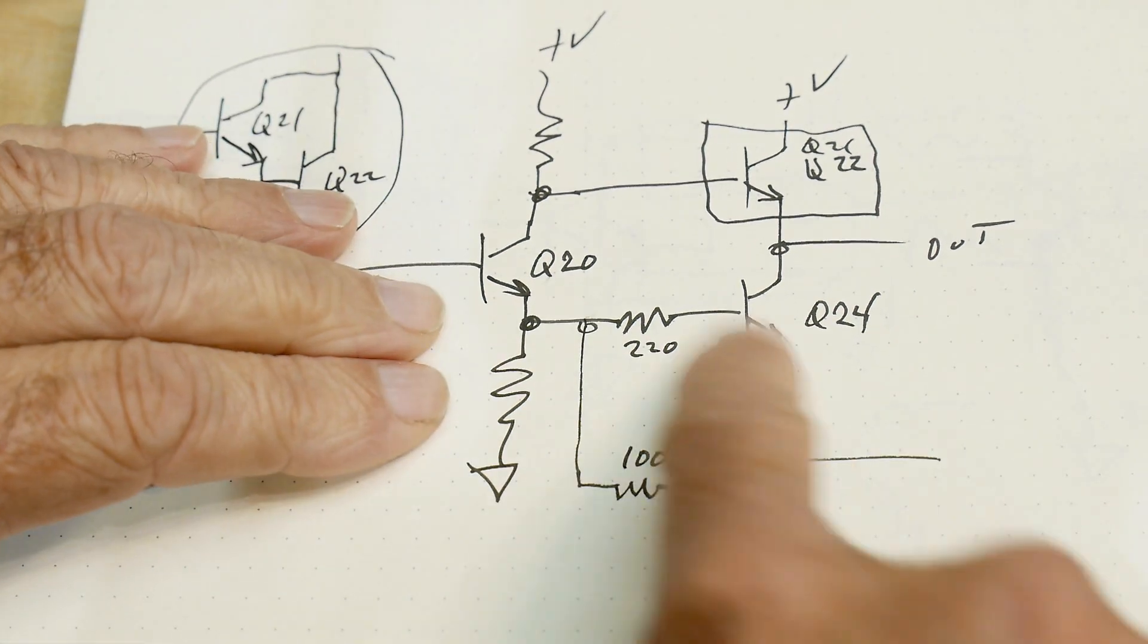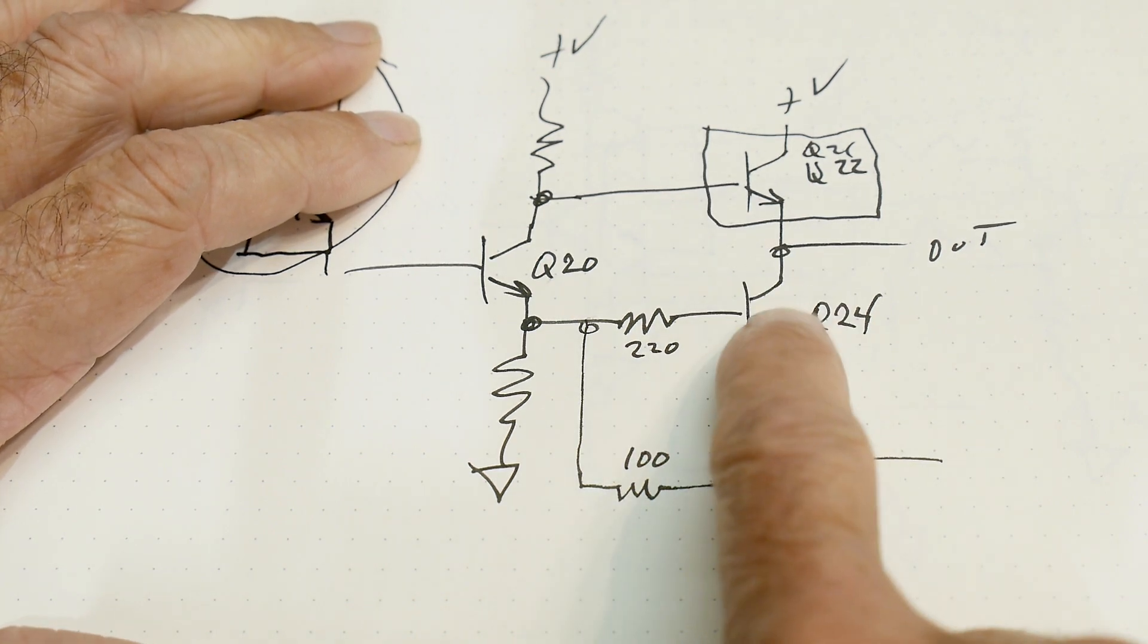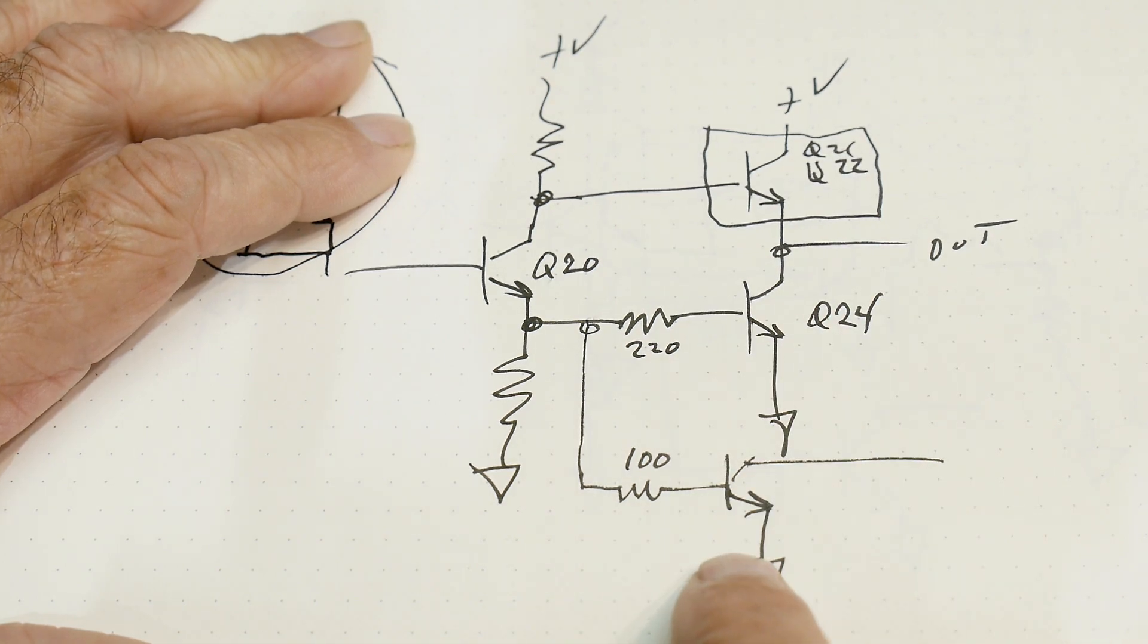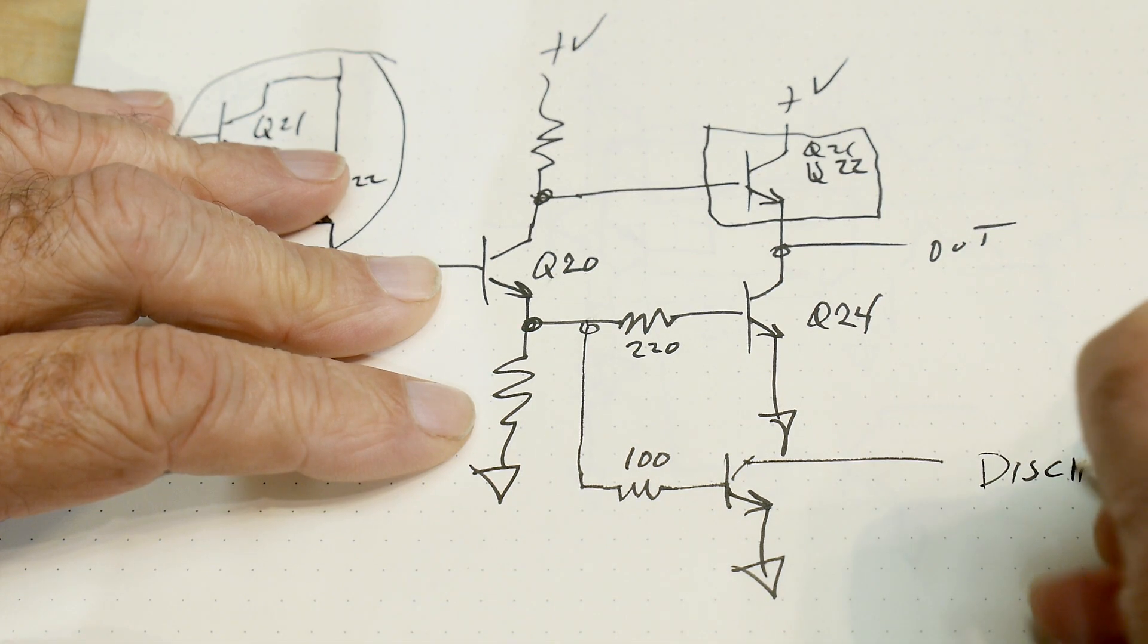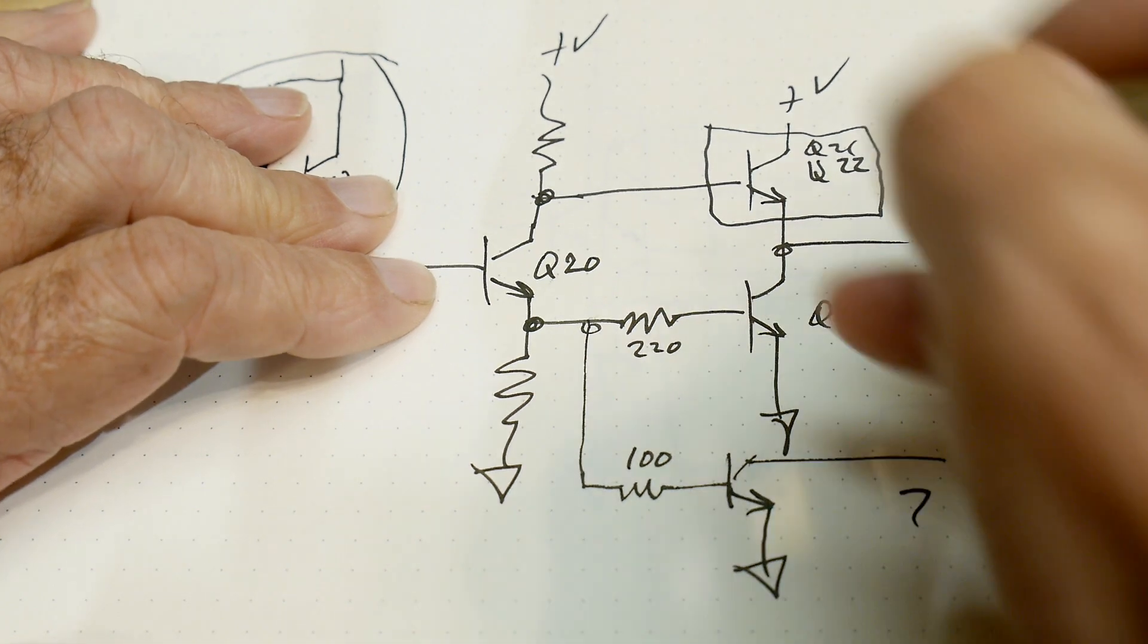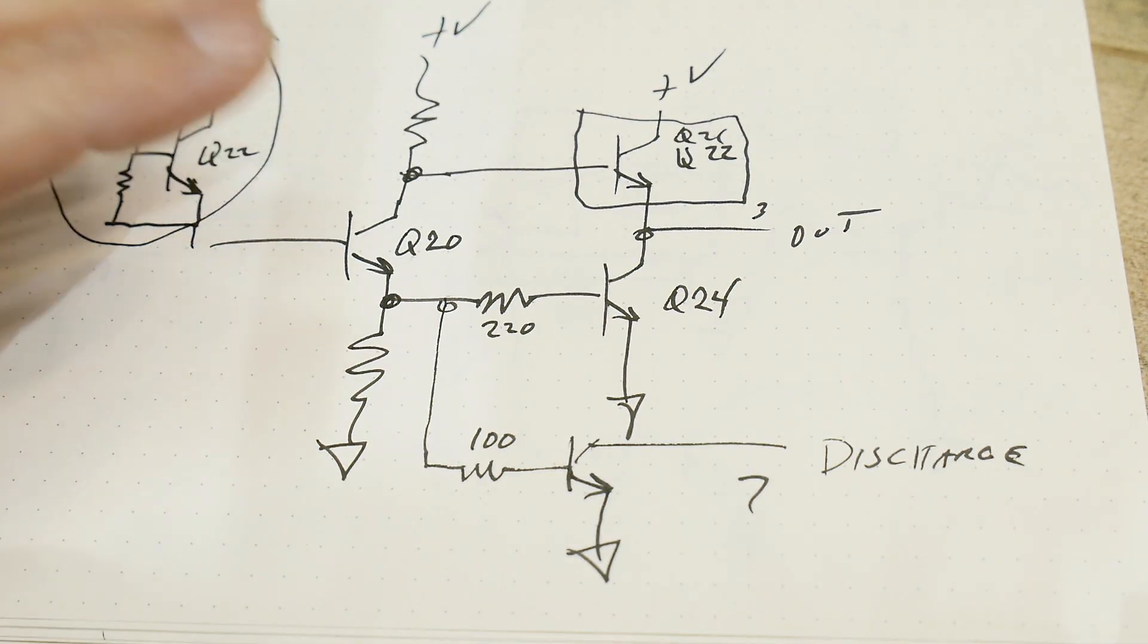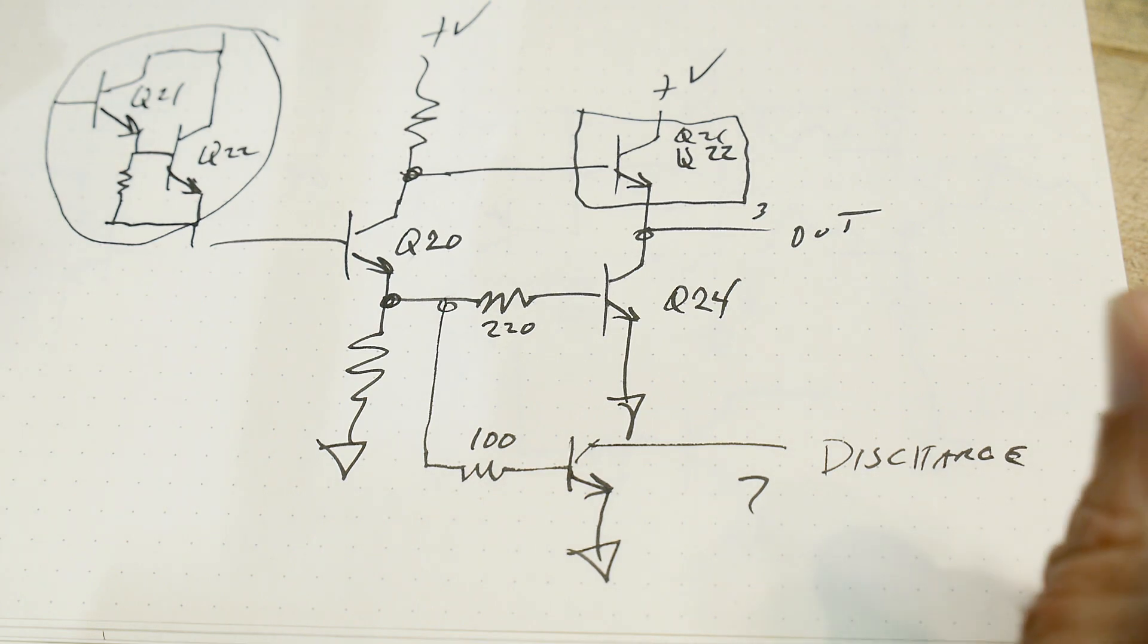That's how that works. That's why I say it's just like another output on the open collector because it comes exactly off the same signal that drives this. No magic, it's just whatever pulls down on this pulls down on this as well. So that's the discharge. That's pin seven, output is pin three. That is all we have in there except there's one extra funny business going on.